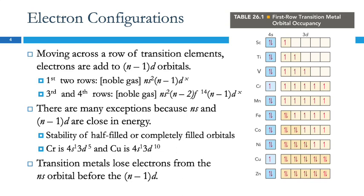When the transition metals become ions, they lose their valence electrons first. This 4s level is the valence shell. Valence electrons are the highest occupied energy level — anything with the highest principal energy level. So even though the 4s electrons were not the last added, those are the first ones that are lost.